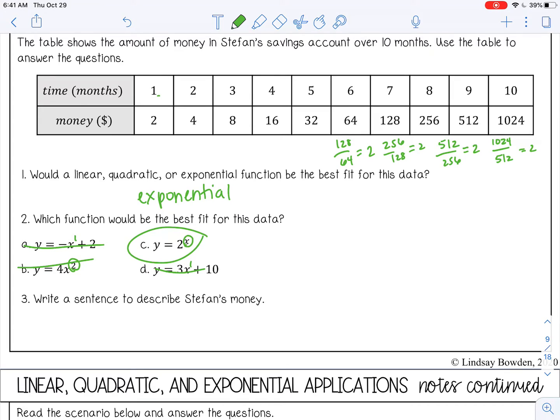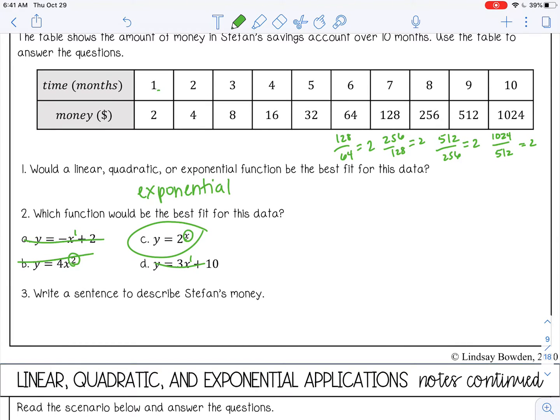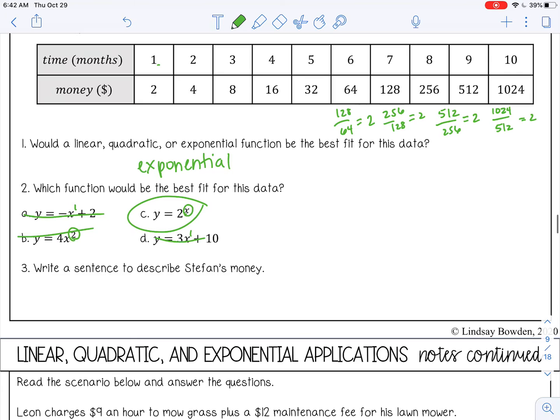And then number three, write a sentence to describe Stefan's money. So it looks like he started at month one and had $2. And then in month two, he had $4. And then fast forward to month 10, he has $1,024. So we can say Stefan's money is increasing, and we know this is an exponential function. So it's increasing exponentially.